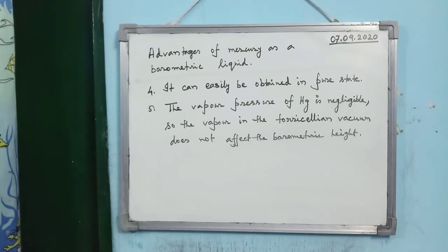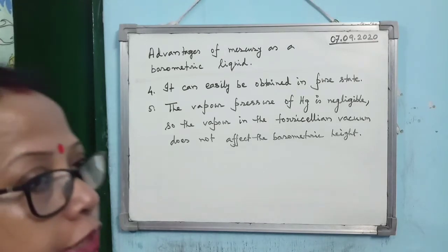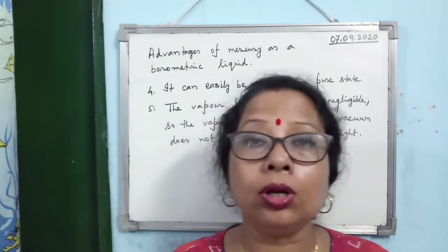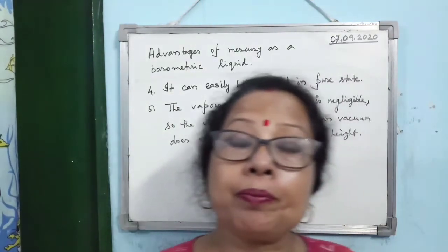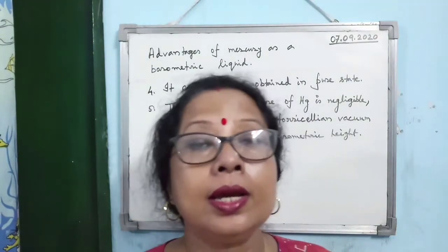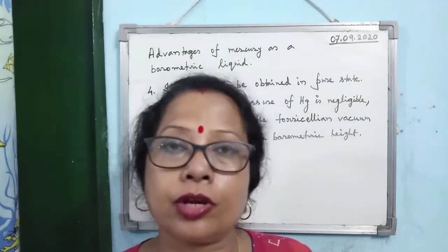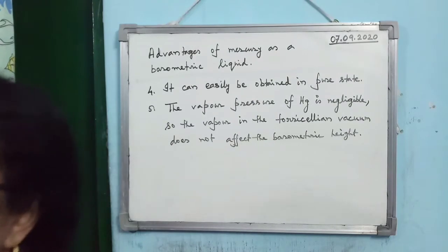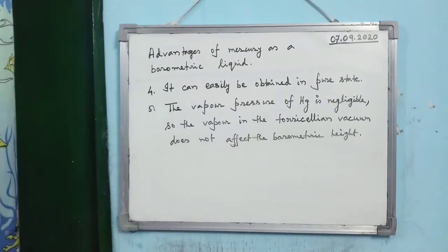Since mercury's vapour pressure is negligible, the vapour present in Torricelli's vacuum generally does not affect the barometric height. These are all the advantages of mercury as a barometric liquid.